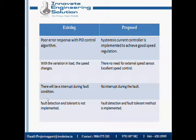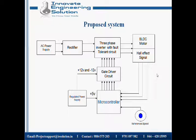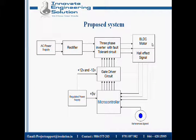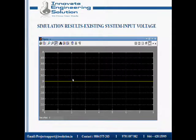In the existing system, fault detection and tolerant control is not implemented. But in the proposed system, there is a fault detection and tolerant method implemented. In the proposed system block diagram, we have a power supply connected to a rectifier, then connected to six switches, and through that to the BLDC motor. Inside the BLDC motor, we have a Hall effect sensor connected to a microcontroller. We have an RPS (regulated power supply) providing +5 volt to the microcontroller and ±12 volt to the gate driver. A reference speed — a constant speed — is given as input by us.